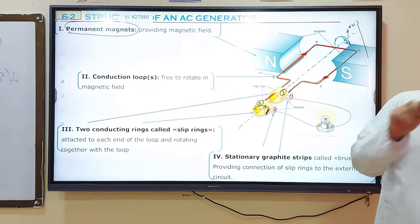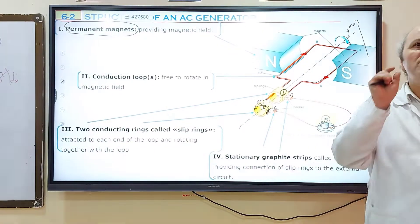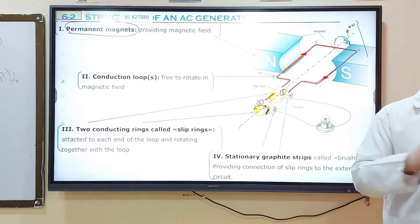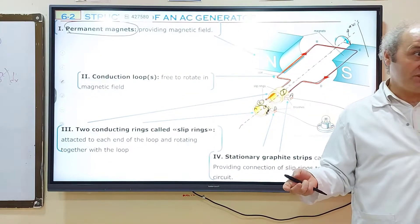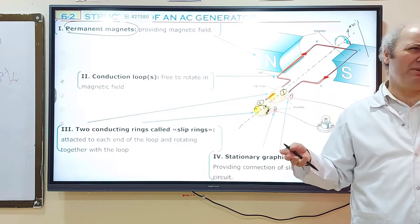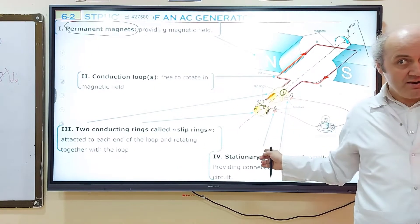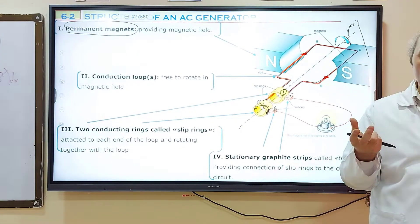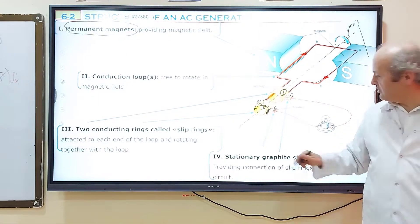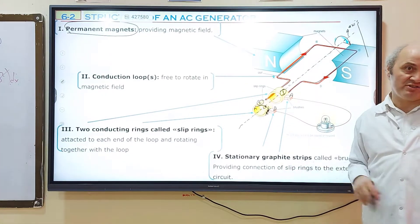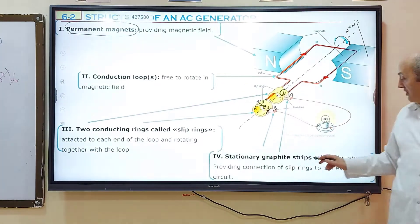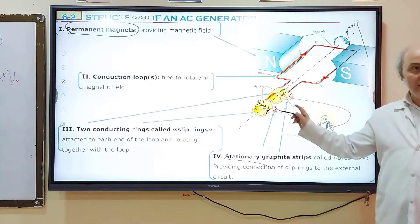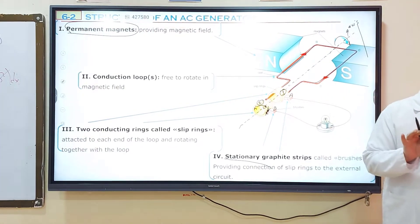Carbon, which is graphite, is used for the brushes because it is a soft material. It doesn't make much sound as it slips. If you used another metal, it could make a very loud sound and disturb the operation. Carbon is soft, so as the ring slips on the surface of the graphite strip, it remains quiet. The brushes A and B are fixed — they are stationary and will not change position.